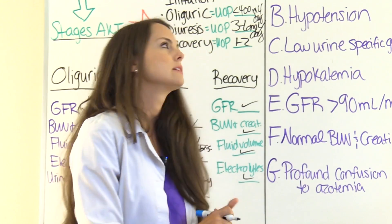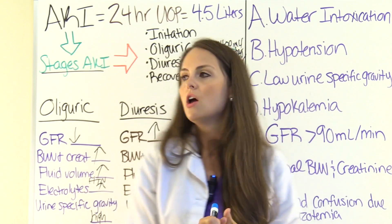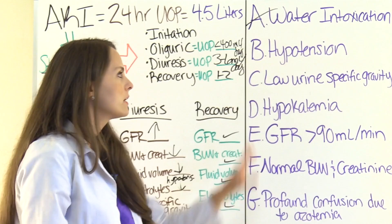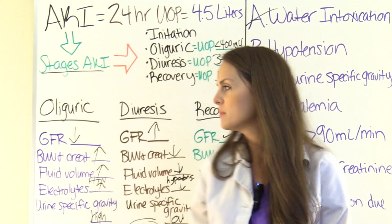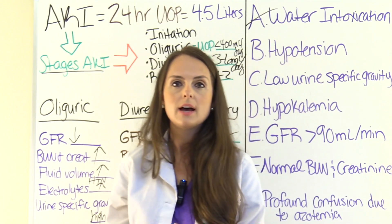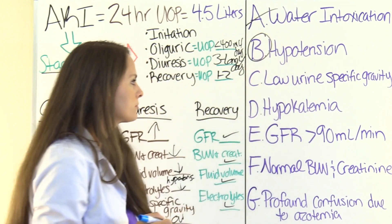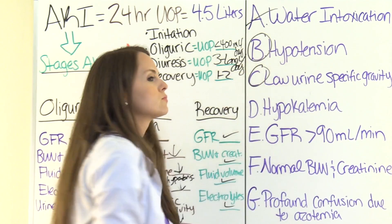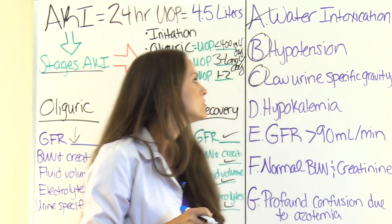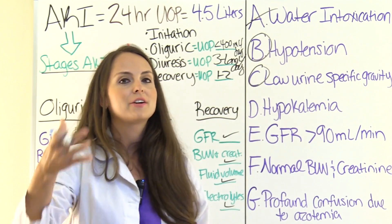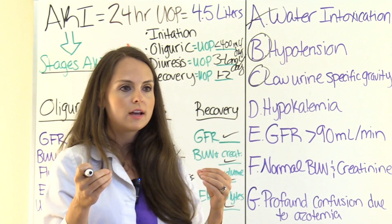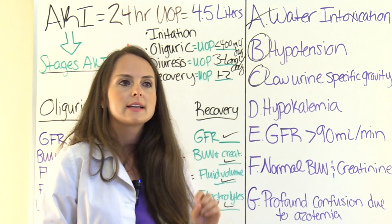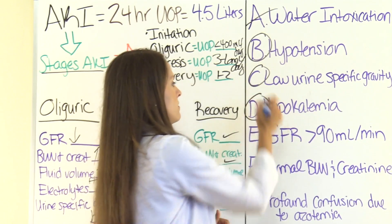A: water intoxication — No. If anything, they're going to be fluid volume depleted, not water intoxicated. B: hypotension — Yes, because they're depleted of fluid volume, urinating out all their fluid. So B is an answer. C: low urinary specific gravity — Yes, it's going to be low because the urine is really diluted, not concentrated like in the oliguric stage. D: hypokalemia — Yes, because they are urinating all that fluid out. Potassium gets wasted, just like when we give loop diuretics like Lasix and watch potassium levels. So yes, hypokalemia.